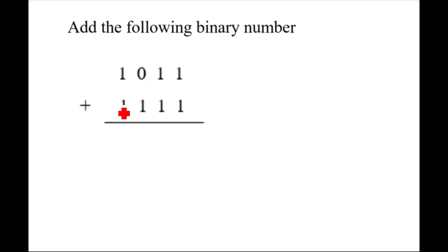I will add these two numbers. Here you can see 1 plus 1, so it will make 2. The most important thing is in binary, when you write any number it should be either 0 or 1. So in binary we write 2 as 1 and 0. You can place 0 here and this 1 will go as a carry.